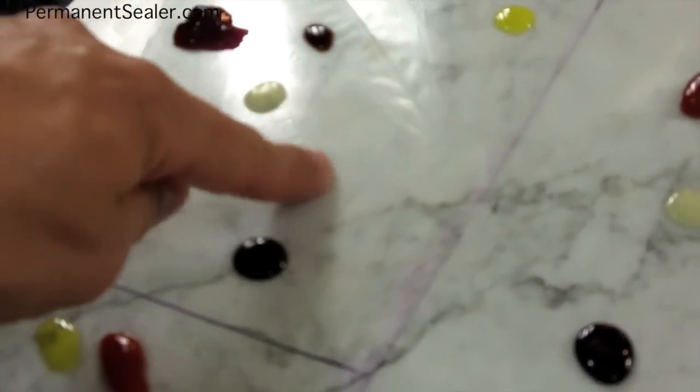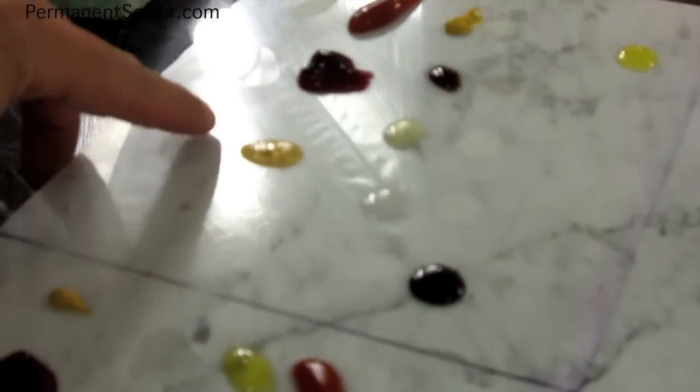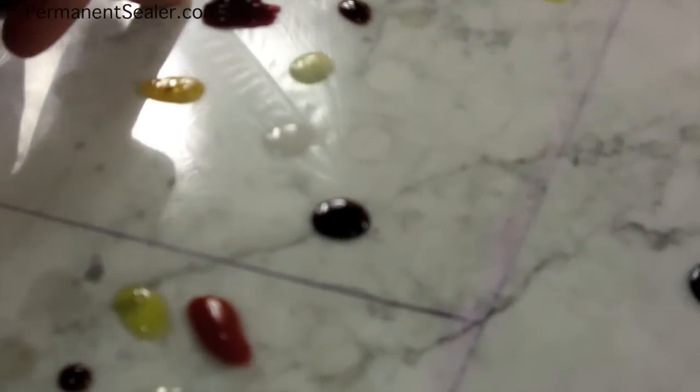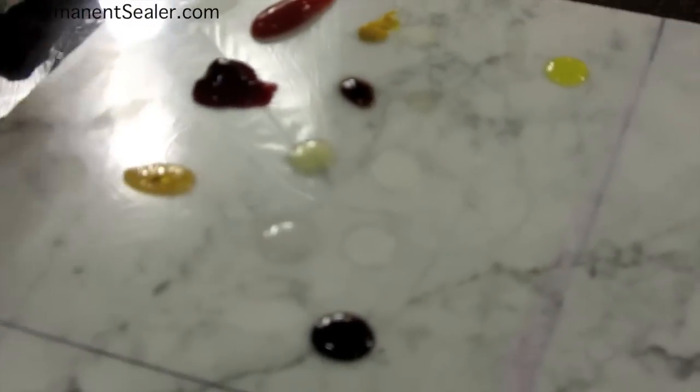Same thing for the vinegar. Those are very, very powerful acids and will eat away at your marble pretty quickly. Once again we have grape jelly. Let's try to wipe this off. That left a slight little etch and no major staining there.